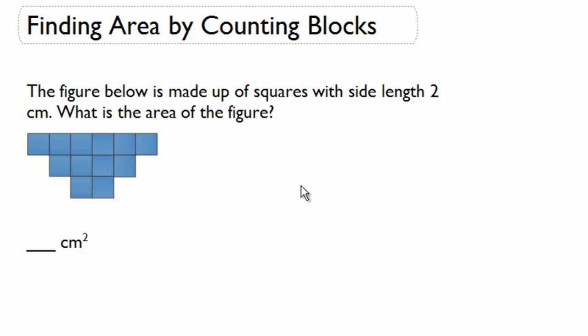Alright, so if one side of each of these squares is 2 centimeters, so this distance right here is 2 centimeters, and this distance on this side is also going to be 2 centimeters, then we need to figure out the area of 1 square. 1 square is equal to 2 centimeters times 2 centimeters. That's going to give us the area of 1 square. Now 2 times 2 is equal to 4 centimeters squared.